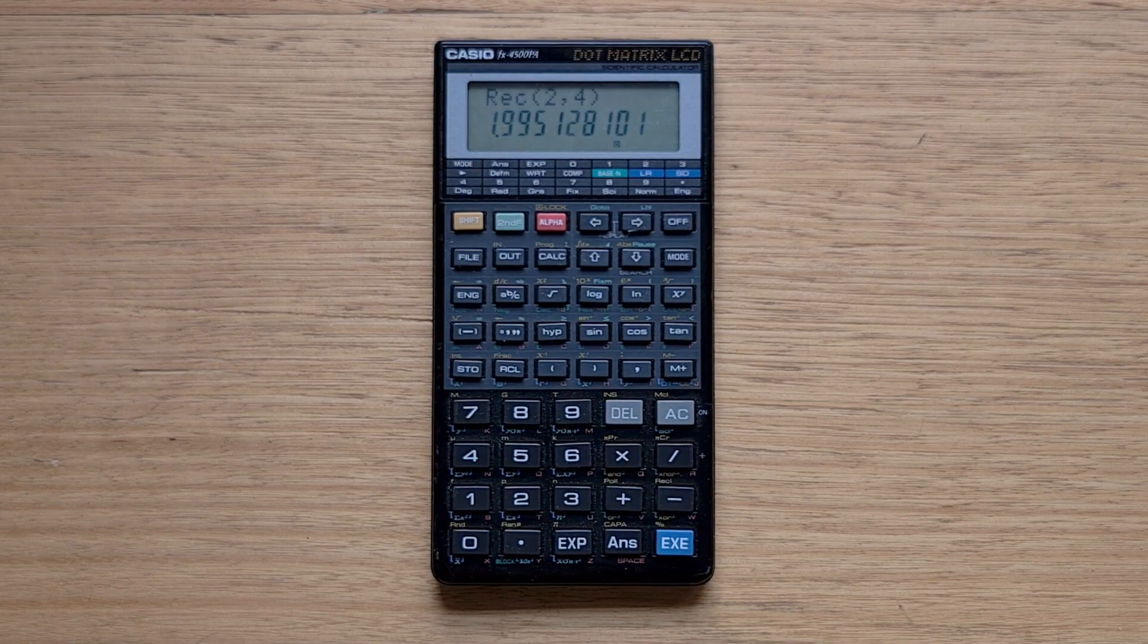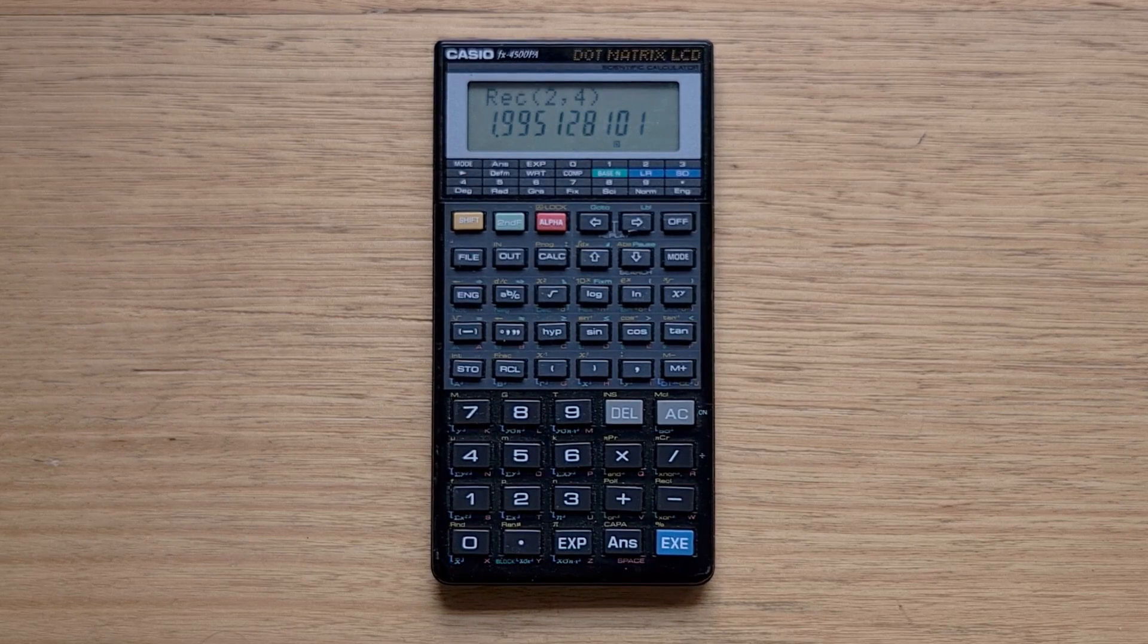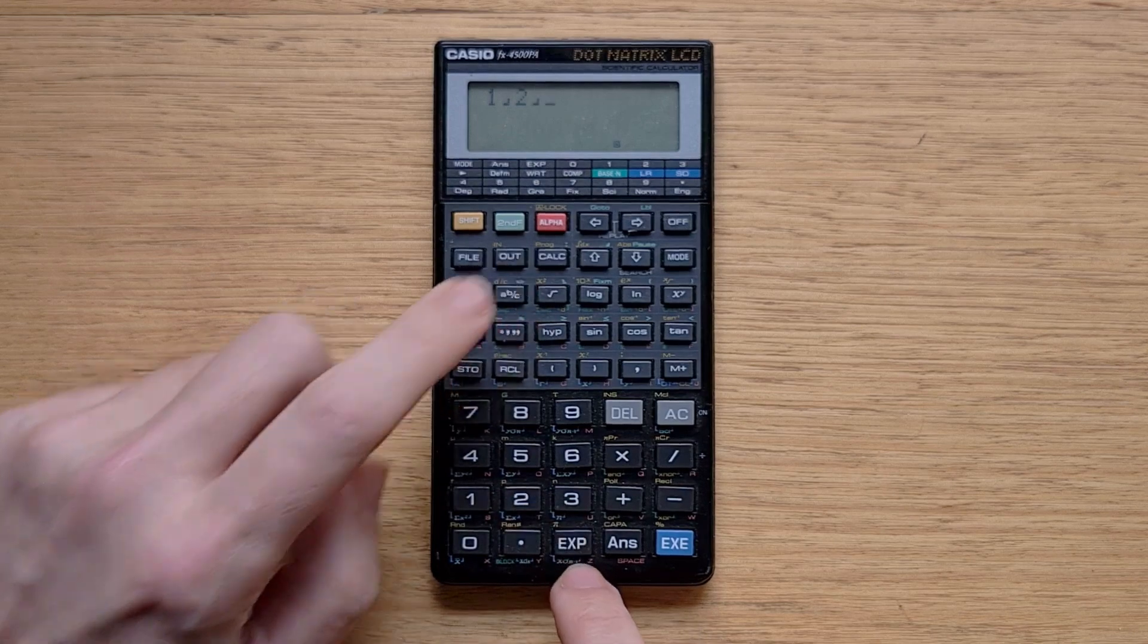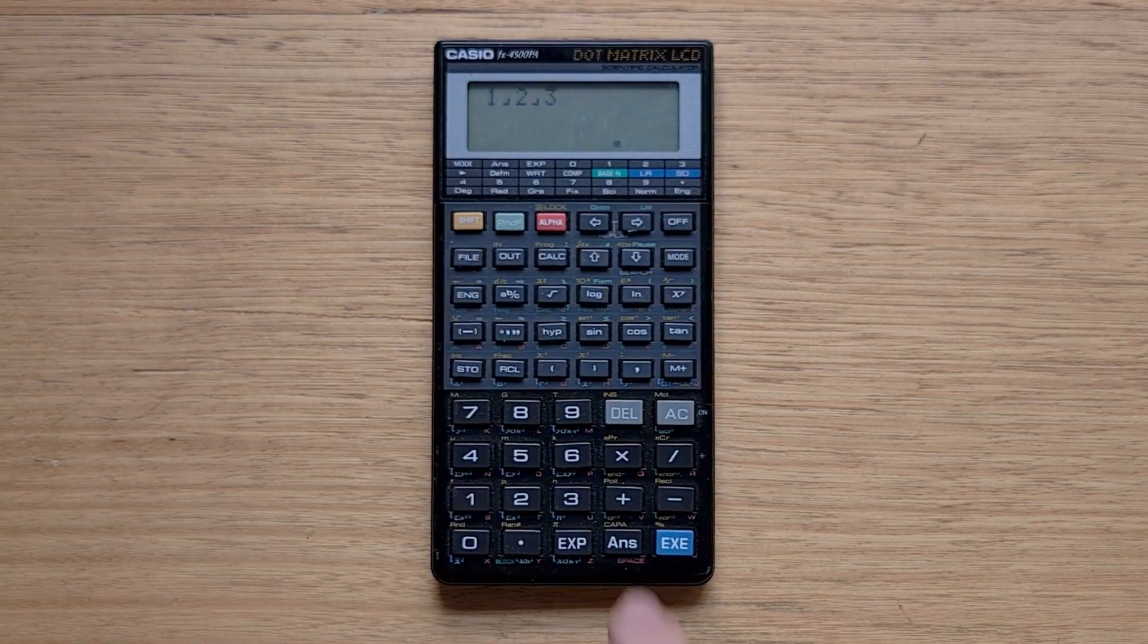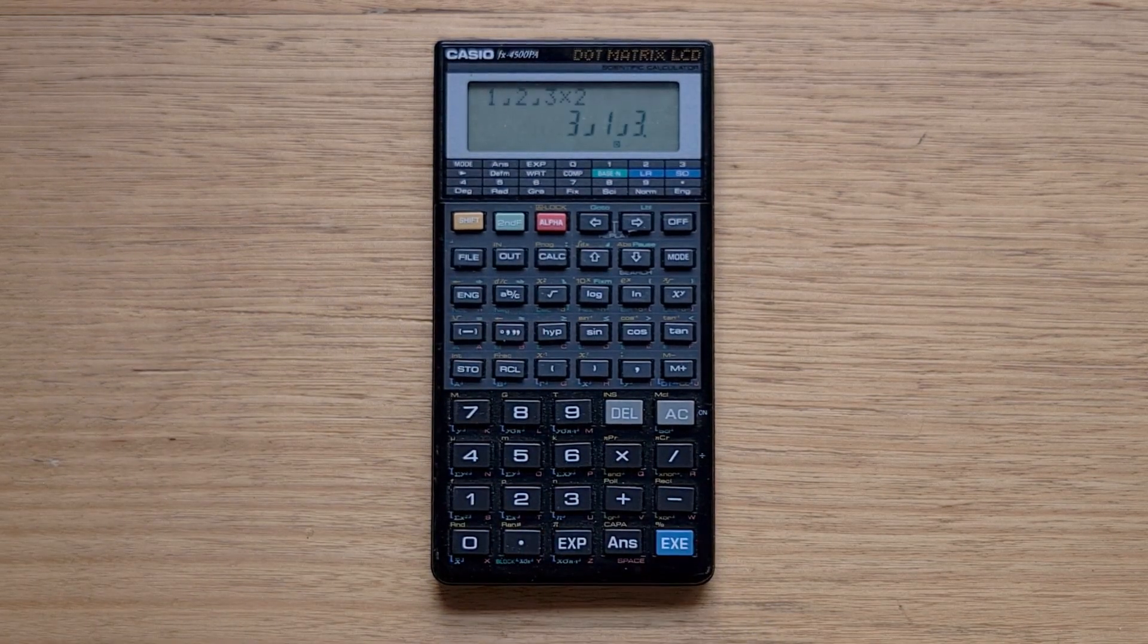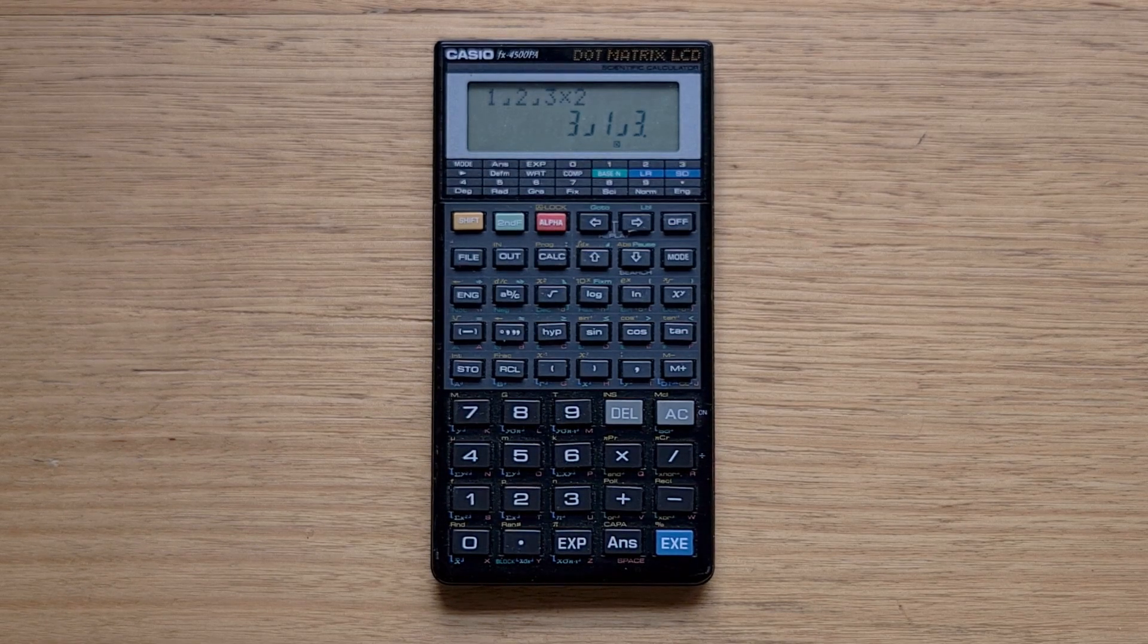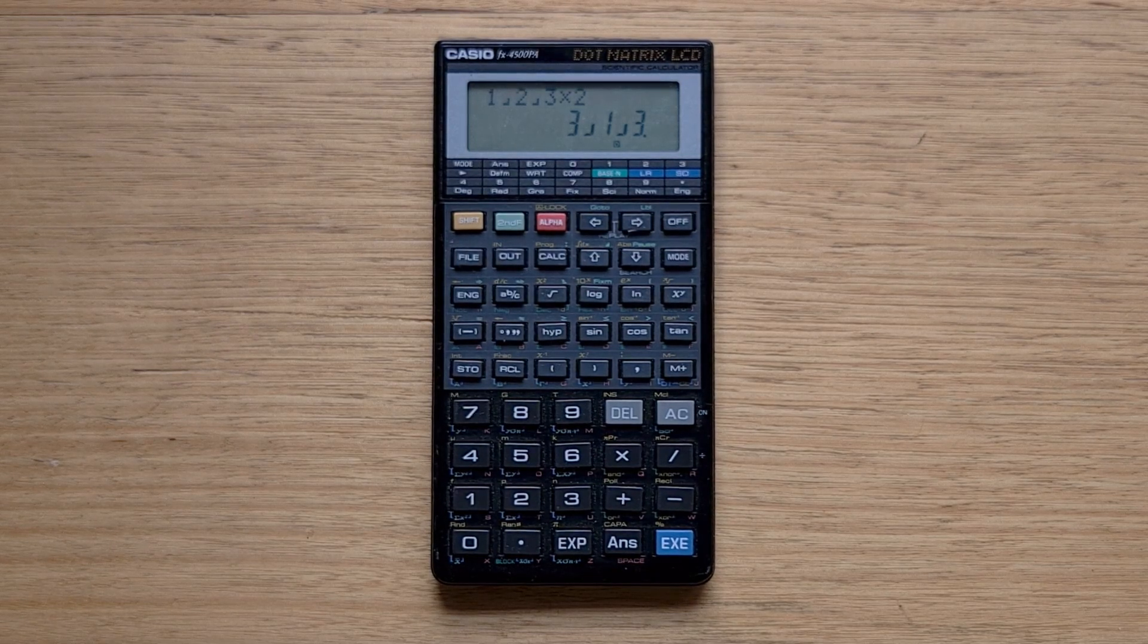So let's say 20 pick 4. But there are some functions like polar and rectangular that you enter in basic style. The 4500P also supports fractions, so you enter them with a fraction button. That's one and two thirds, and let's multiply that by two. So that's three and a third.